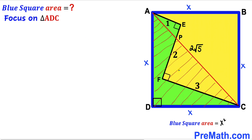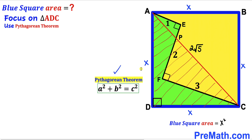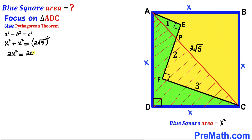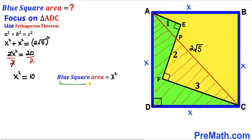Now applying the Pythagorean theorem to right triangle ADC, where the hypotenuse is the diagonal 2√5 and the two legs are each X: X squared plus X squared equals (2√5) squared. This gives 2X squared equals 20. Dividing both sides by 2, X squared equals 10. Since the blue square area equals X squared, the area of square ABCD is 10 square units.